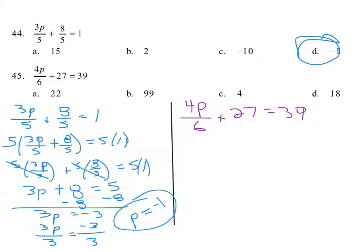So we're going to undo this constant by subtracting 27 from both sides. We get 4p over 6 equals 39 minus 27 is 12.